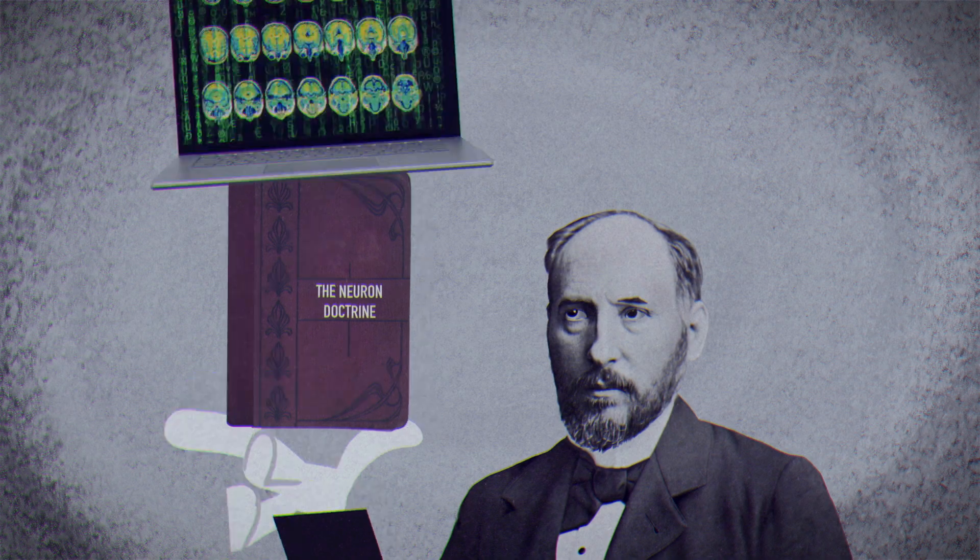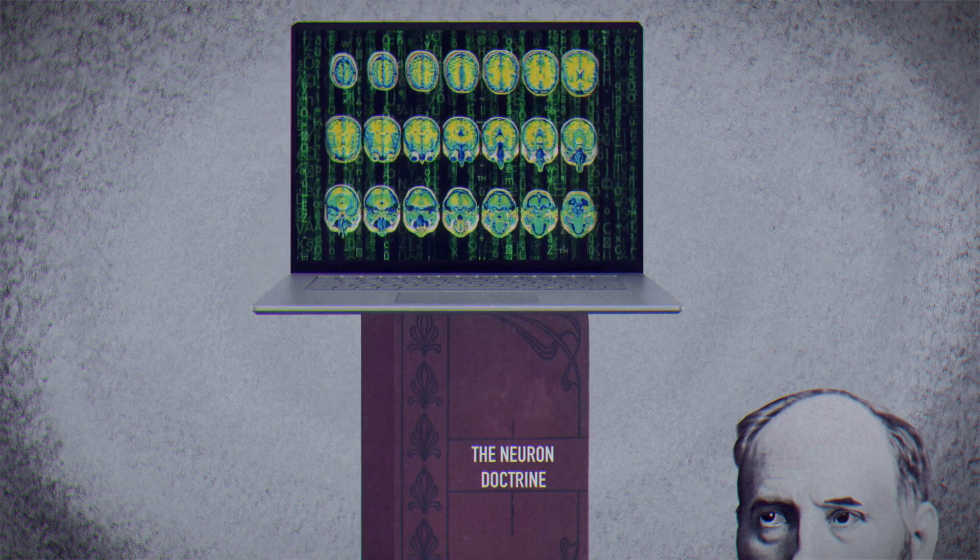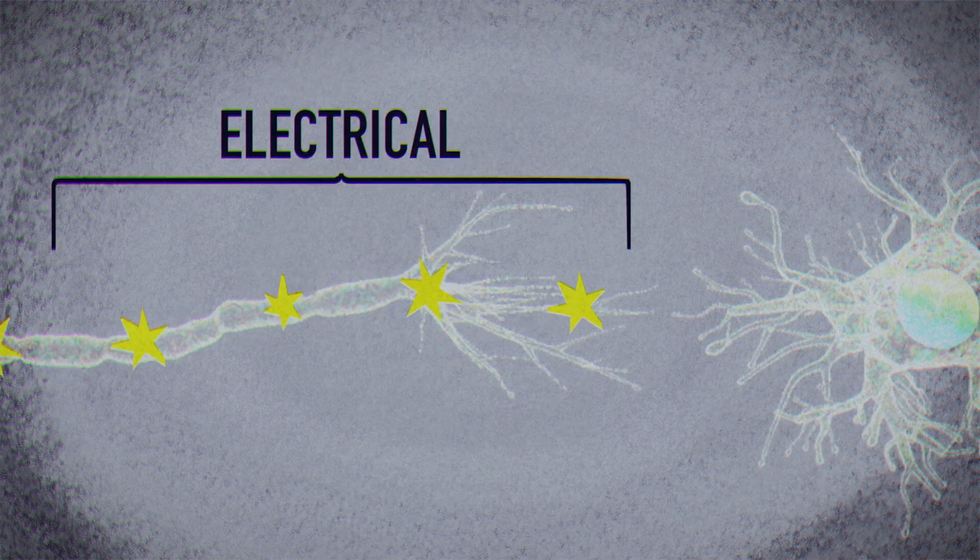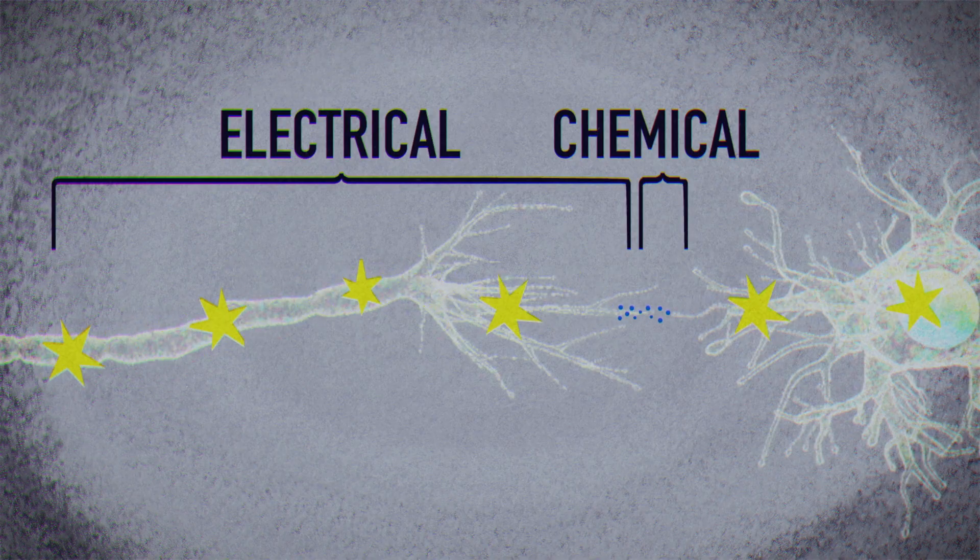The neuron doctrine laid the foundation for modern neuroscience and allowed later researchers to discover that electrical impulses are constantly converted between chemical and electrical signals as they travel from neuron to neuron.